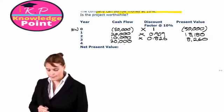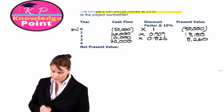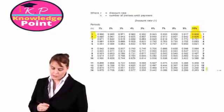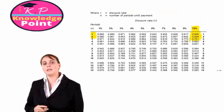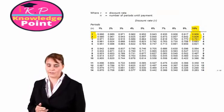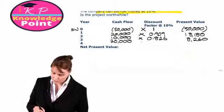Looking at our tables again, the discount factor in three years' time with a rate of 10% is 0.751.